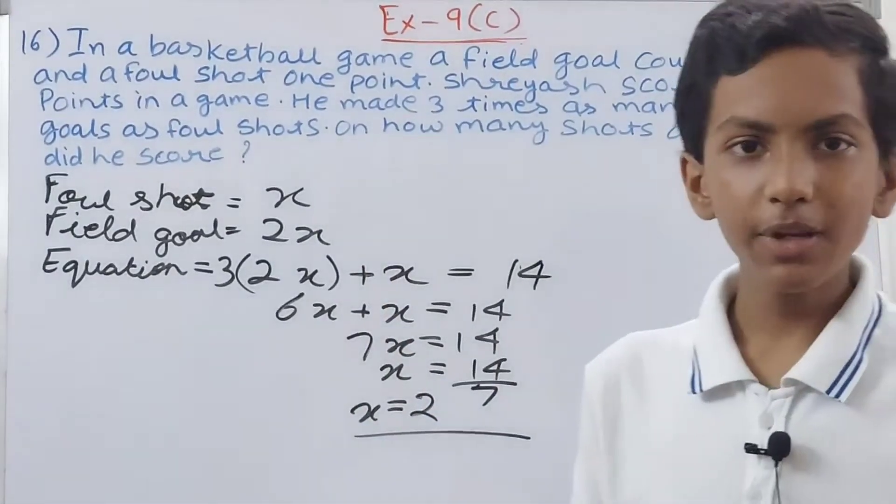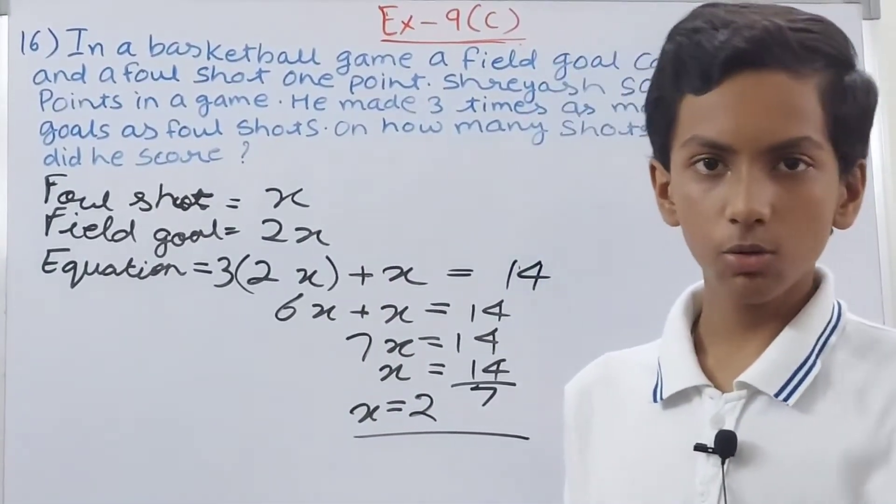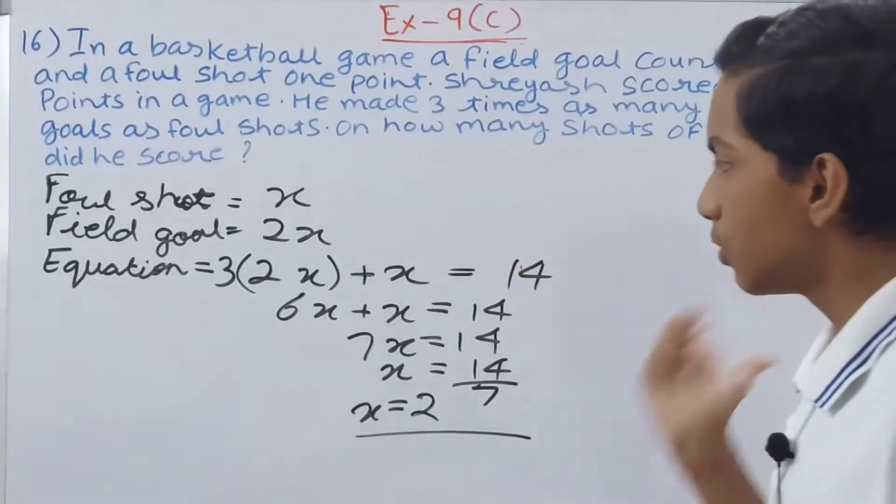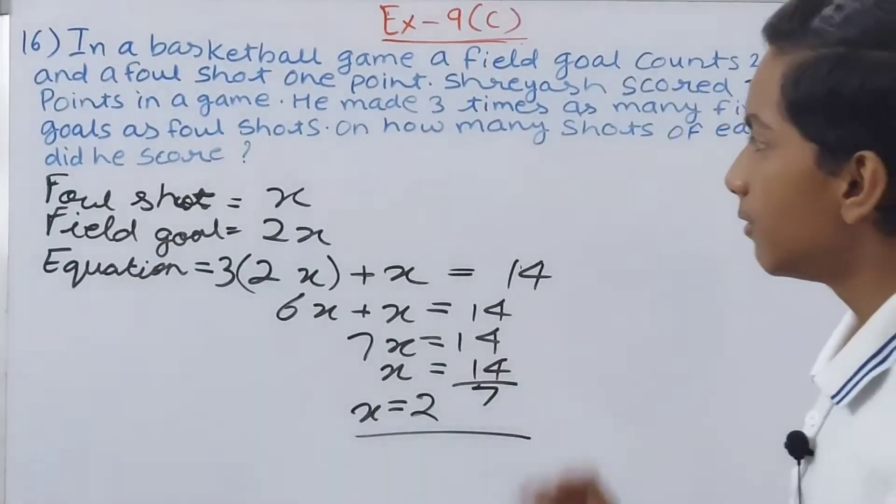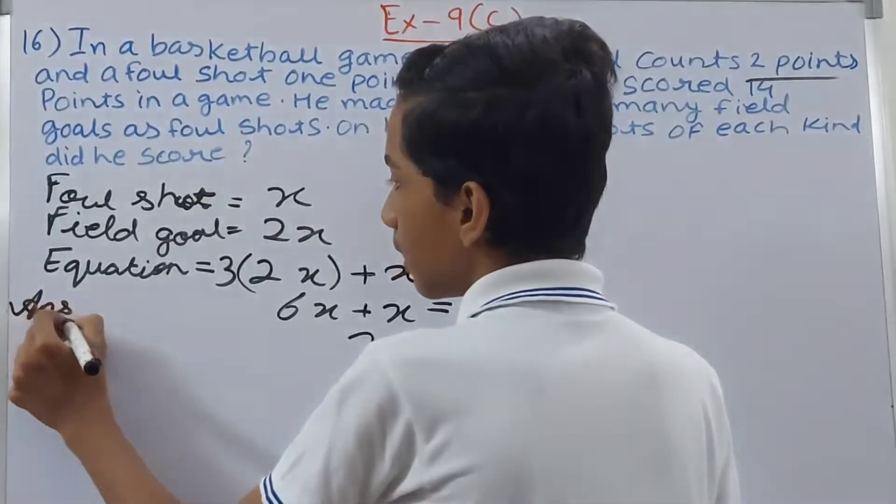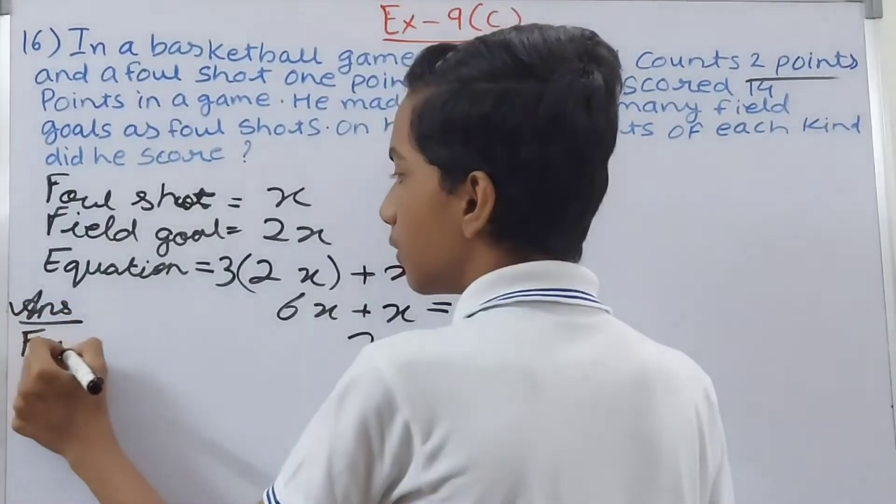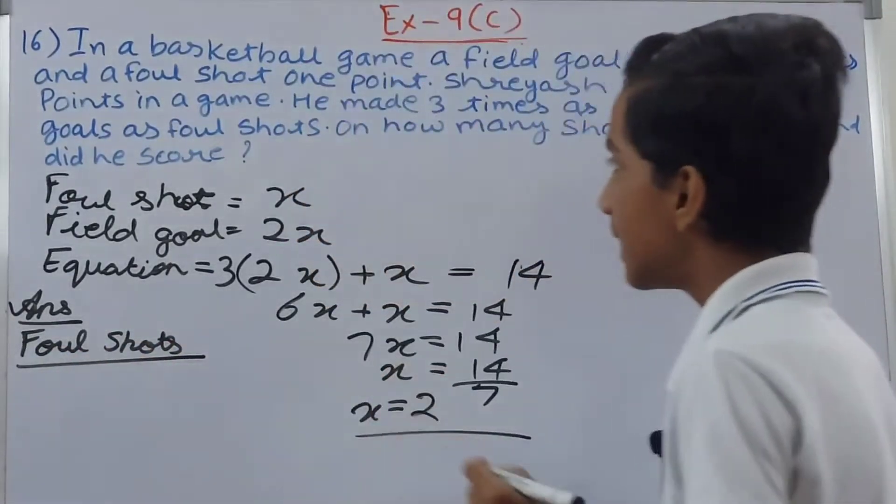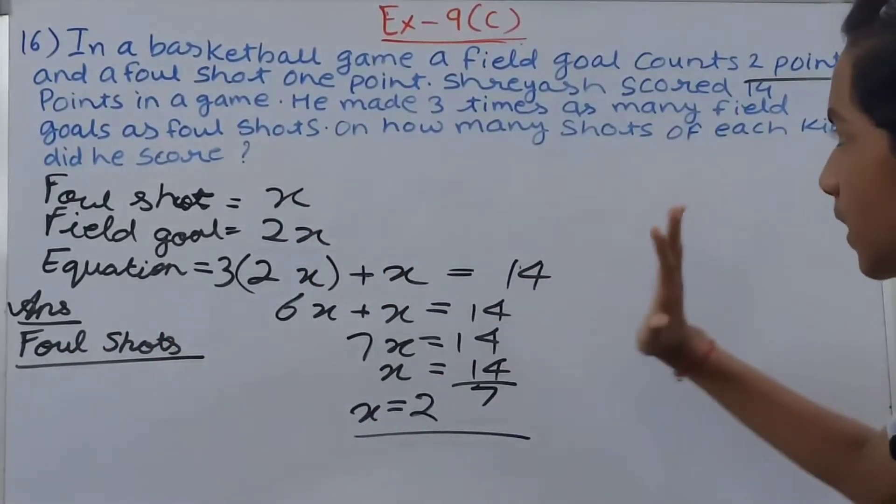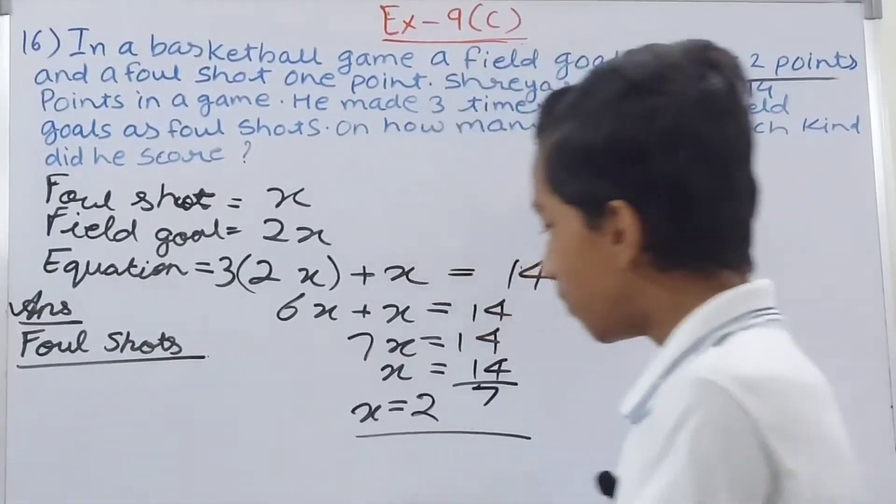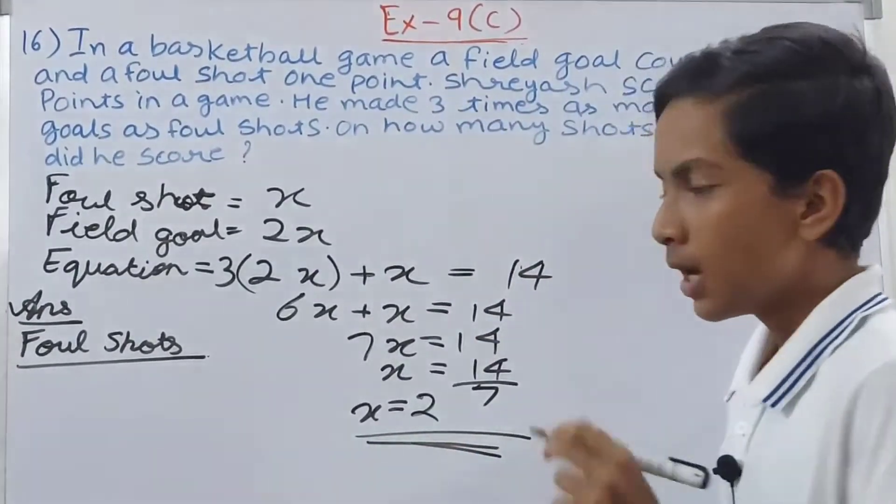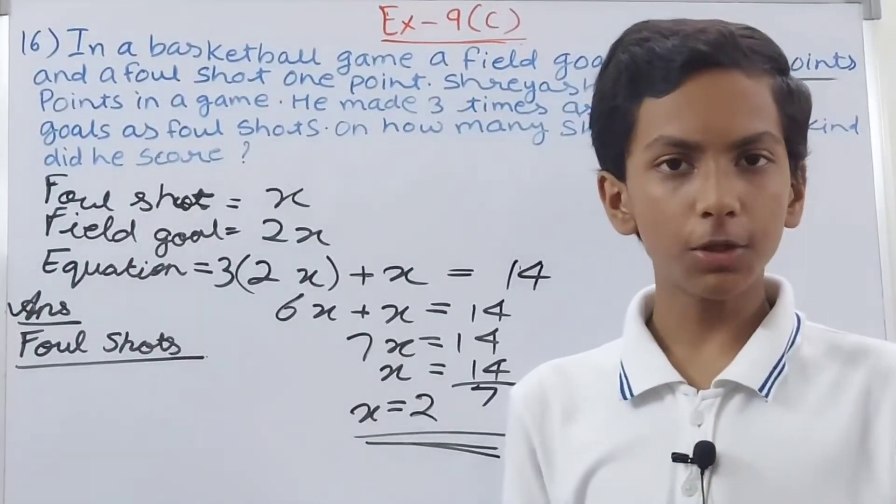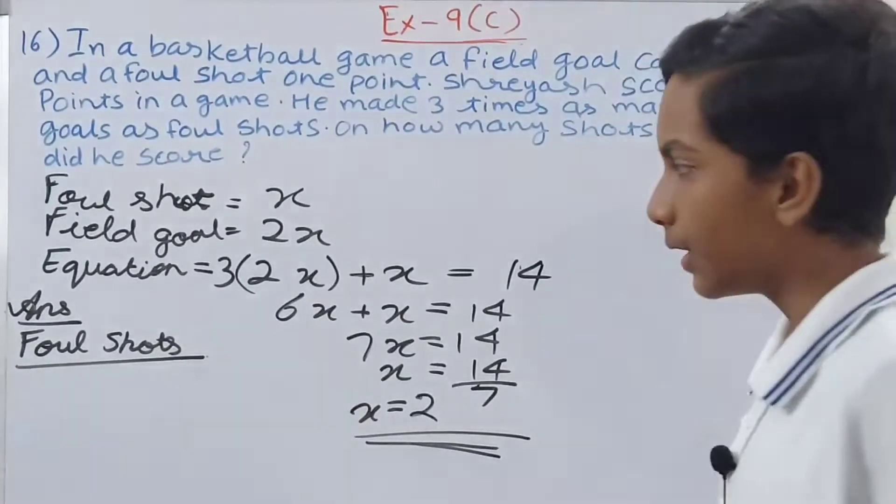x represents foul shots, so he scored 2 foul shots. The question asks how many shots of each kind did he score. If one foul shot is 1 point, then 2 foul shots gives 2 points. So he played 2 foul shots.